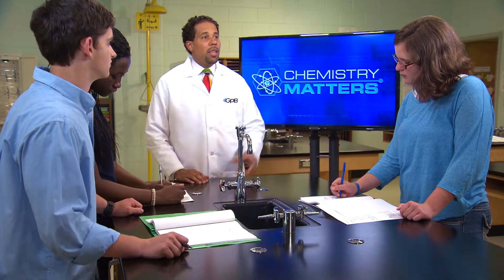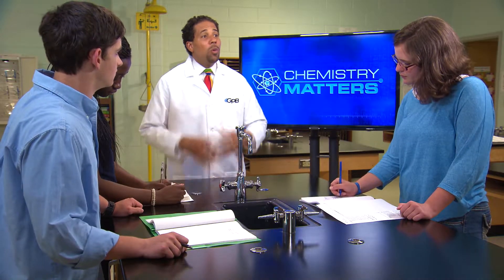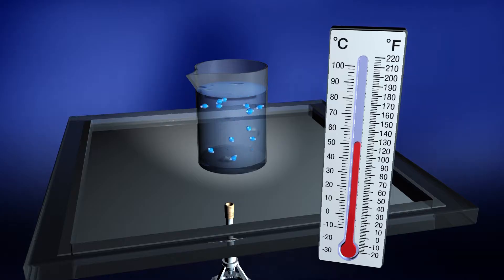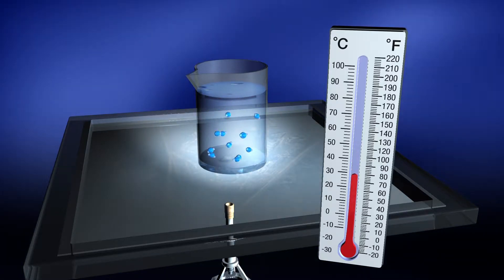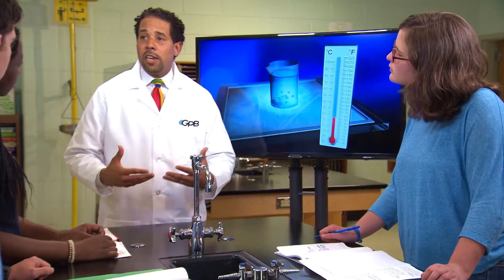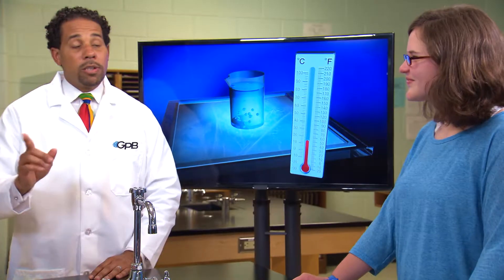Boiling will only happen when the temperature is at or above the boiling point. If we remove the heat from a system and cool down the matter, the gas would turn into a liquid — we call this phase change condensation. Condensation is the phase change that occurs when water vapor cools down to form liquid water. If we keep lowering the temperature to get the liquid into a solid form, we would call this phase change freezing.